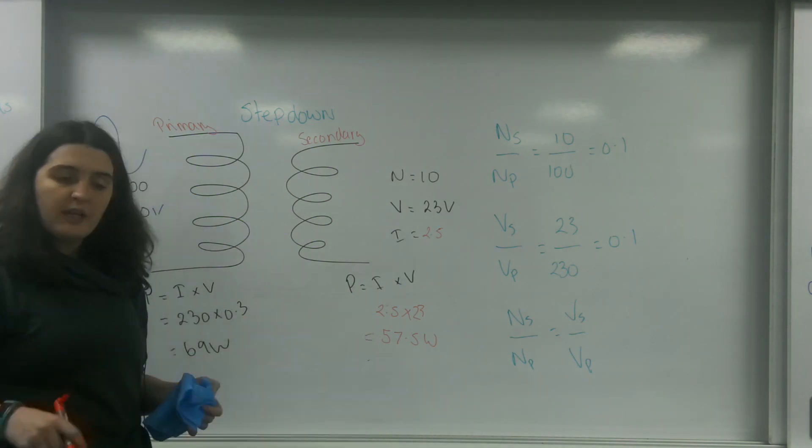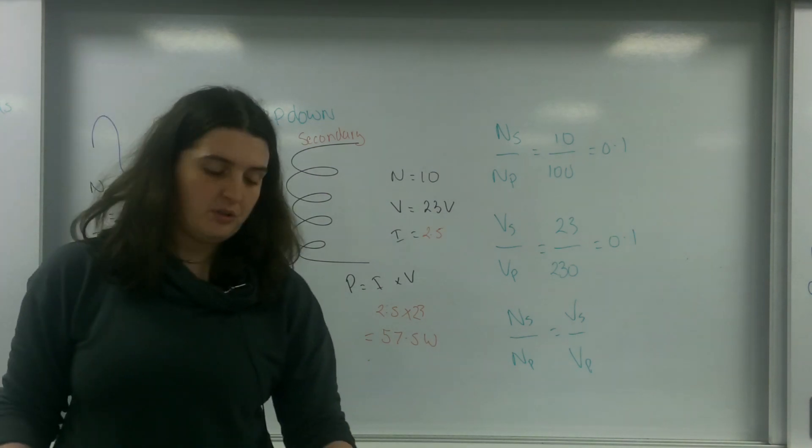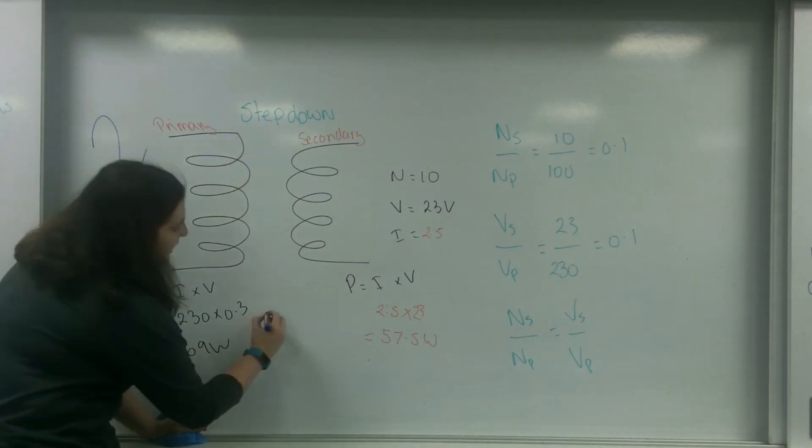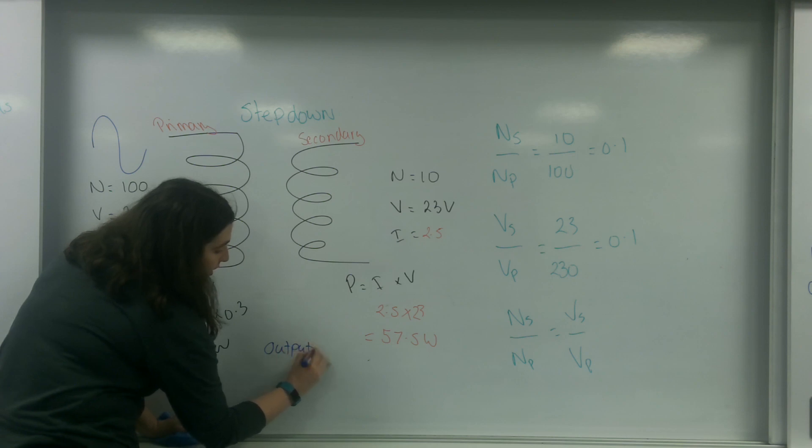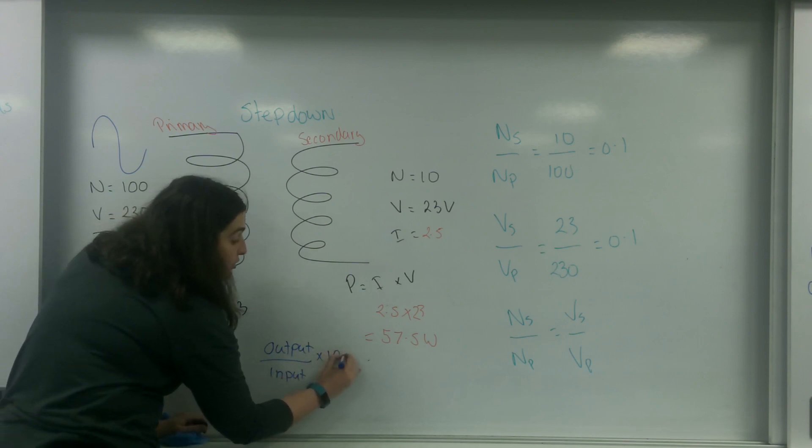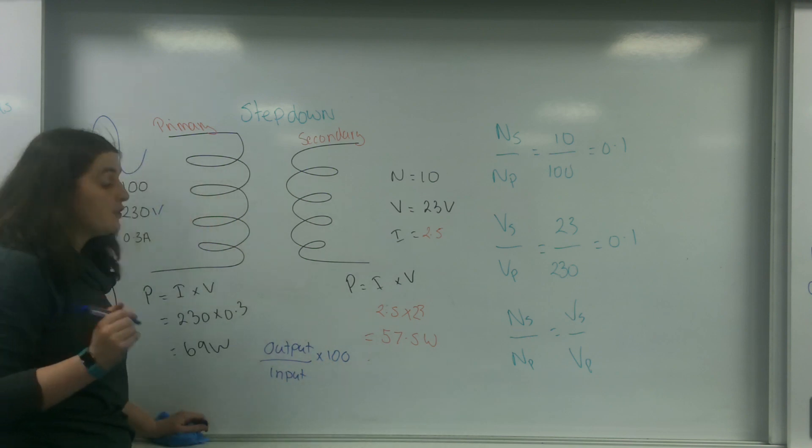So if I was going to work out how efficient it was, if I took my output and divided that by my input and times that by 100, I could work out my percentage efficiency.